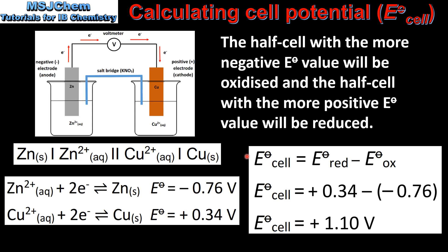Next we will use this equation to calculate the cell potential. We just saw that the Copper half cell will undergo reduction and the Zinc half cell will undergo oxidation. So we input the values for the reduction potentials of the Copper half cell and the Zinc half cell. That gives us positive 0.34 minus negative 0.76, which gives us a cell potential of positive 1.10 volts.